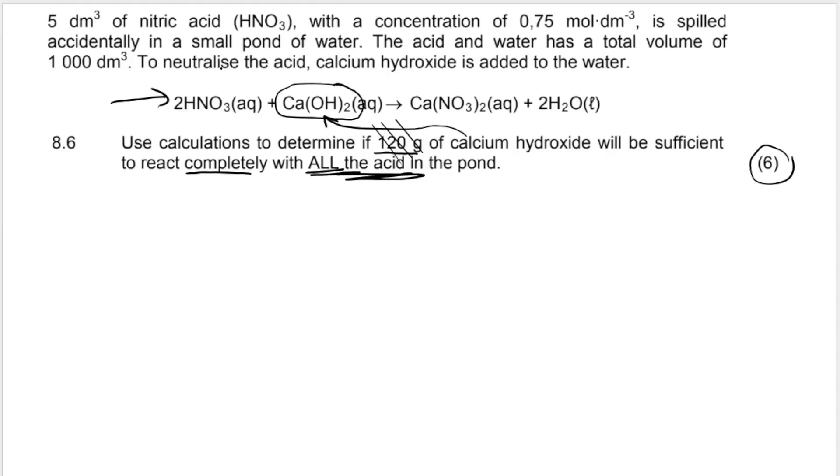How I would do this is I would first, I would ignore the 120 for now and I would work out how much or how many grams of calcium hydroxide will react if I want to use up all the acid. So I'm asking myself if I want to use up all the acid in the pond or react completely all the acid in the pond, how much calcium hydroxide do I need? If I get 120 grams or more, then obviously then it's not going to be enough. But if I need 100 grams, then 120 will be enough. I hope that makes sense.